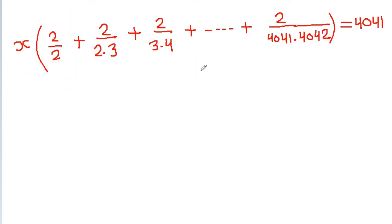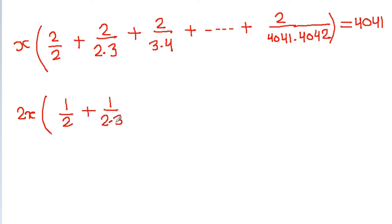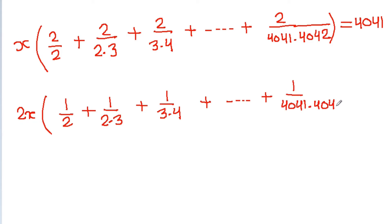If we take 2 common, then we get 2x times: 1 by 2 plus 1 by (2 into 3) plus 1 by (3 into 4) plus up to 1 by (4041 into 4042), that is equal to 4041.